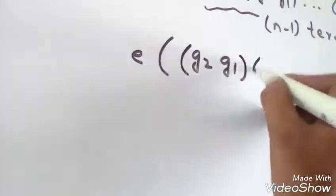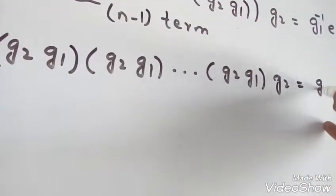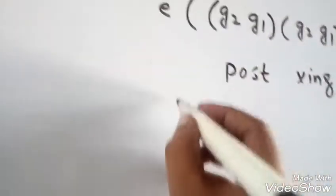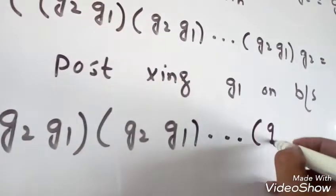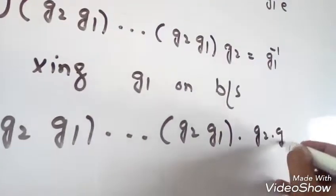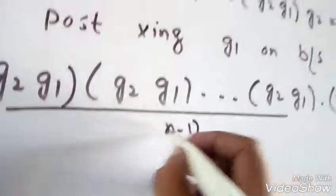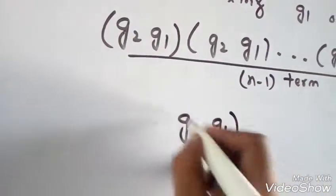So pre-multiplying G1 inverse on both sides, we get G1 inverse·G1·(G2·G1·G2·G1·...·G2·G1) equal to G1 inverse·identity. This gives identity·(G2·G1)^(N-1)·G2 equal to G1 inverse. Now post-multiplying G1 on both sides, we get (G2·G1)^N equal to identity, with N terms.